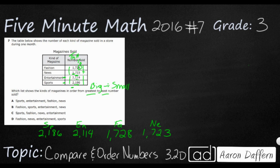Let's look at our answer choices. We have two choices with sports first: A and C. But only A has entertainment second, fashion third, and news fourth. So A is our answer.